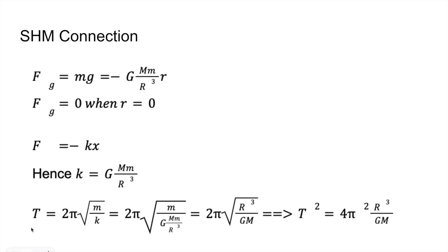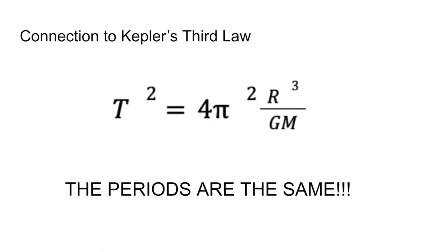We also know that for simple harmonic motion, the period is given by this formula. So if we substitute for k, and if we square both sides, we get that t squared is equal to 4 pi squared r cubed over gm. And you might be saying, why did you square both sides? My friends, I squared both sides because it gives Kepler's third law, which means the periods are the same.